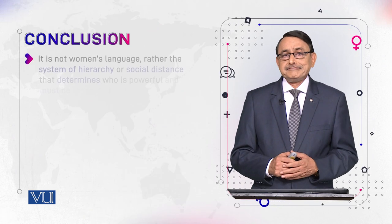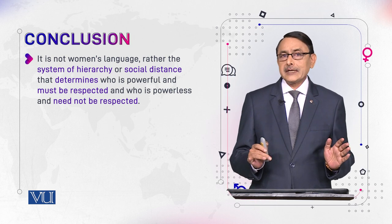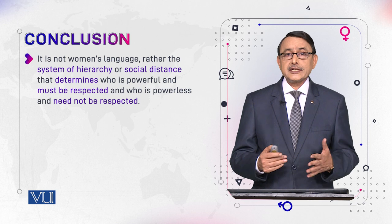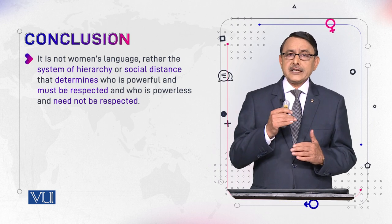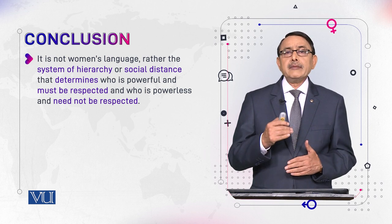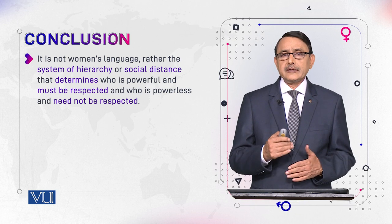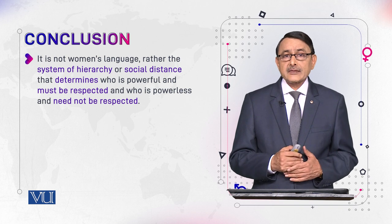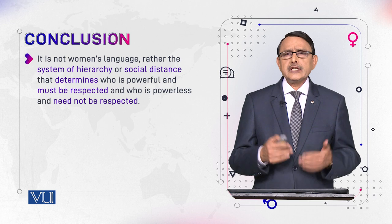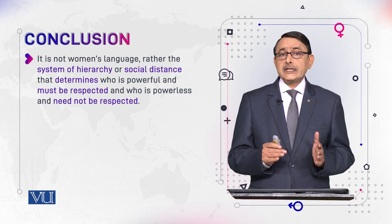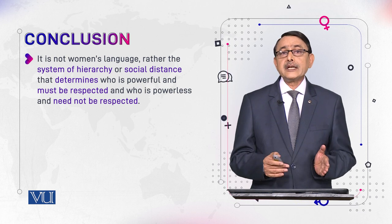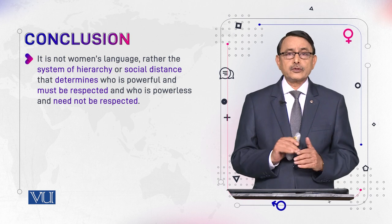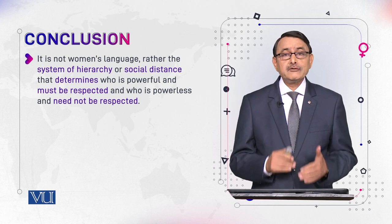We conclude from these examples that it is not women's language, as Lakoff says, but rather the system of hierarchy — as seen in the example of Japan — the system of hierarchy that is maintained by patriarchy, where men are higher in status or position than women. Hierarchy also shows social distance: one person is superior and the other is inferior. It is actually this hierarchy, this social distance maintained by culture and society, that creates different positions in discourse — it is not gender or language itself that creates the difference.